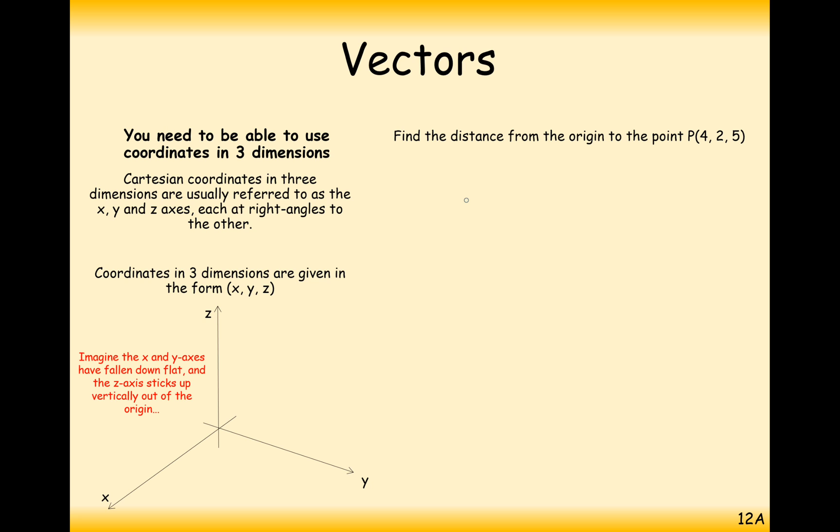For example, a coordinate in three dimensions could be 4, 2, 5. So 4 on the x coordinate, 2 on the y coordinate, and 5 on the z coordinate.